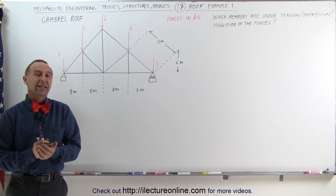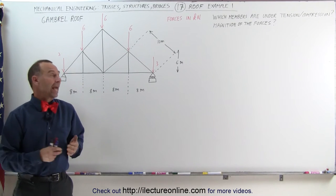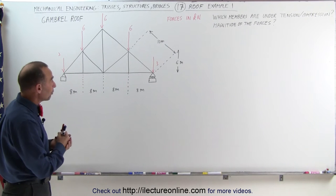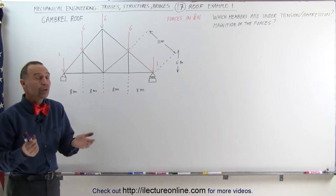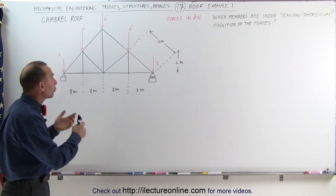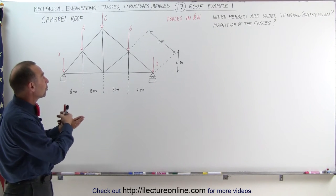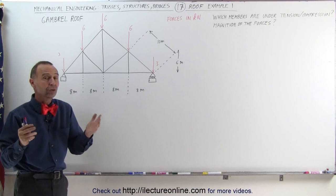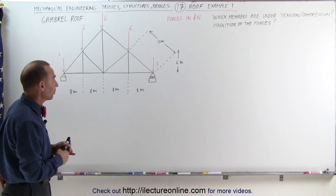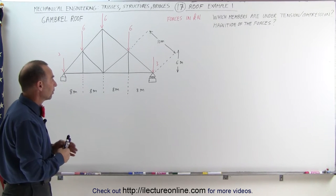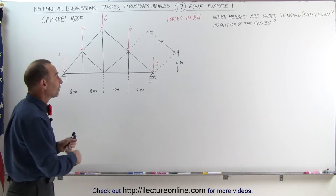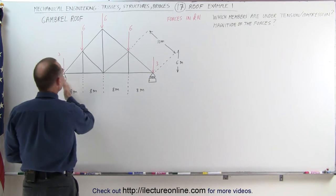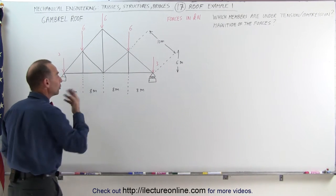Welcome to ElectronLine. In this example we have a roof truss called a gambrel roof, and what we're supposed to do here is find out which of the members are under compression, which ones are under tension, and what is the magnitude of the forces on each of the members. The first thing you want to do is figure out how much force is on the support points right there.